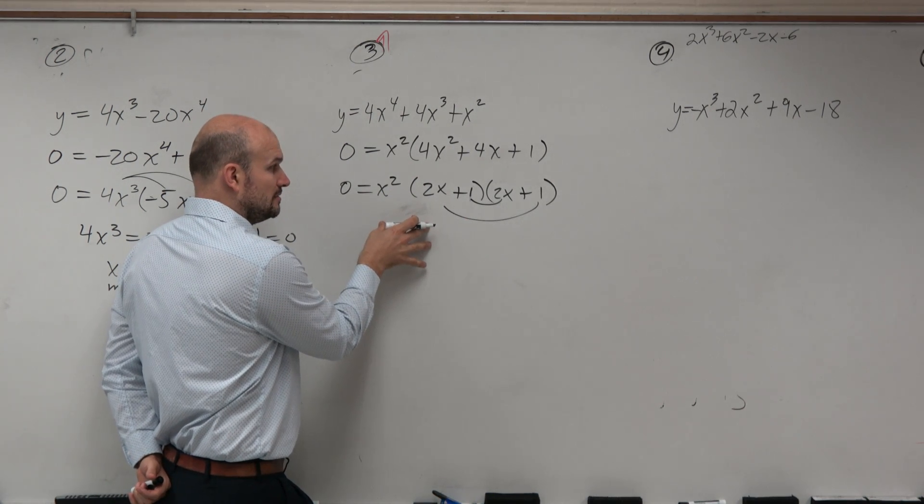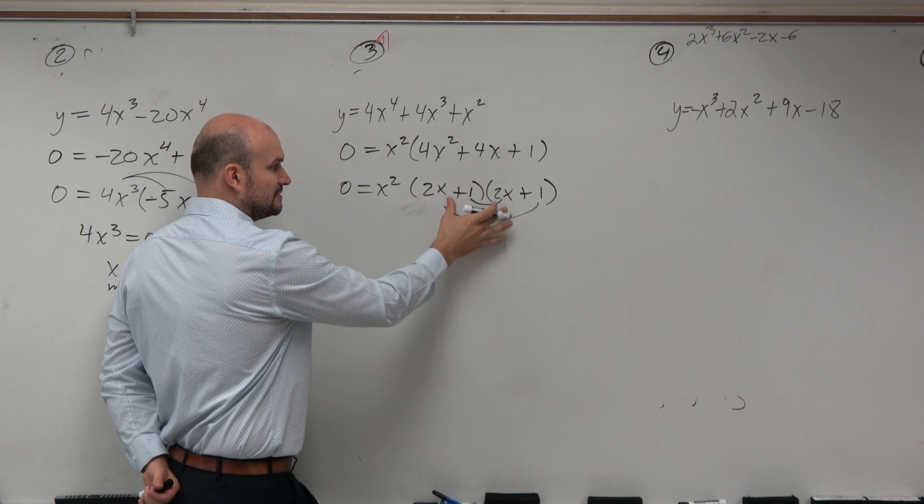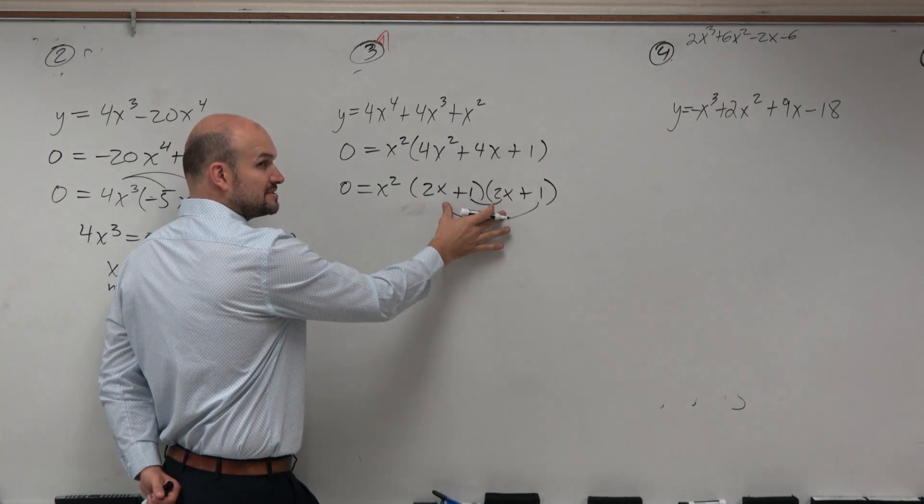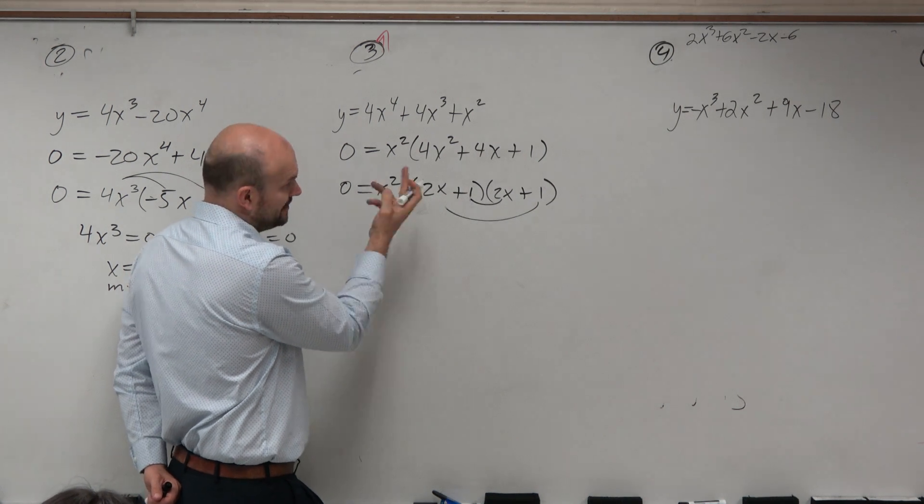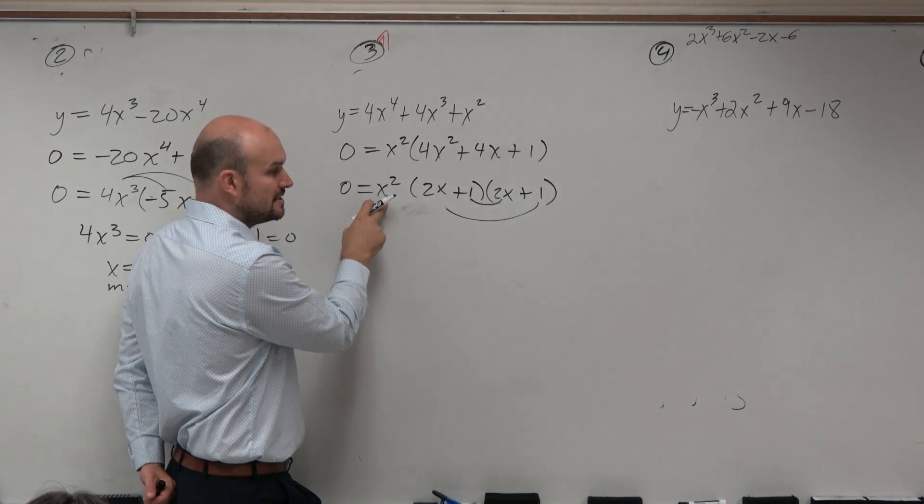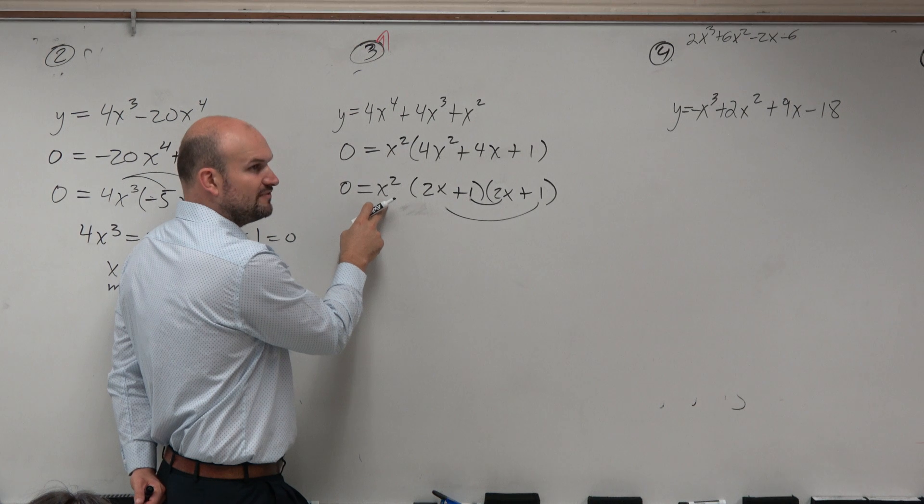So now this is written as a product of linear factors, right? I can't really factor this any further. You could factor this to x times x, right? But that's not going to help you out.